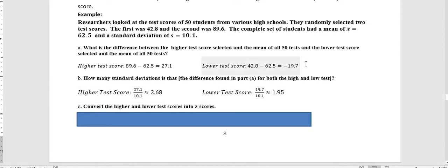For the lower test score, it was negative 19.7, but for standard deviation, we're not talking about negative and positive. We're just going to take the absolute value of that 19.7, divide by 10.1, and we get 1.95 as our standard deviation.